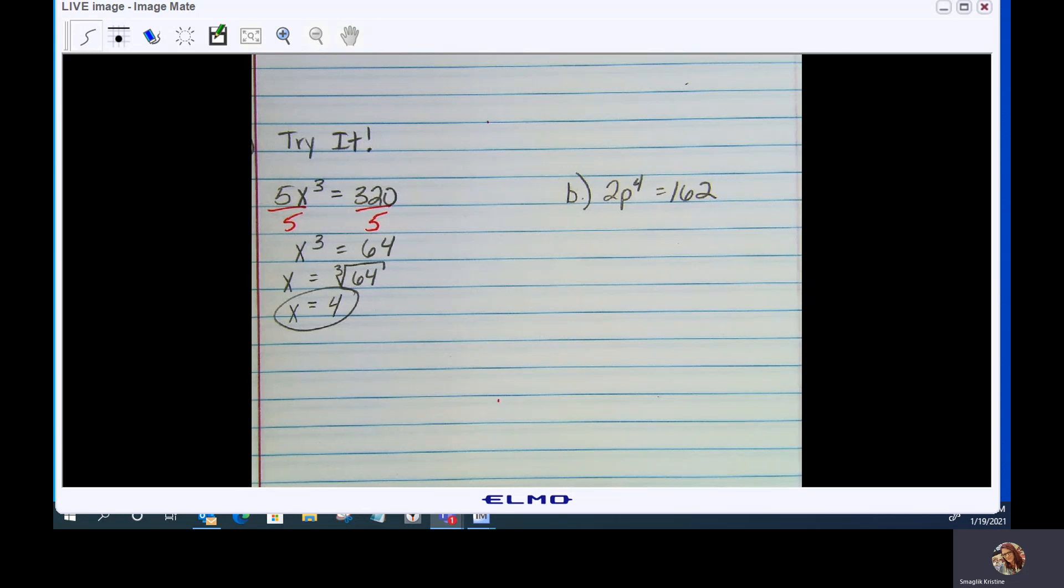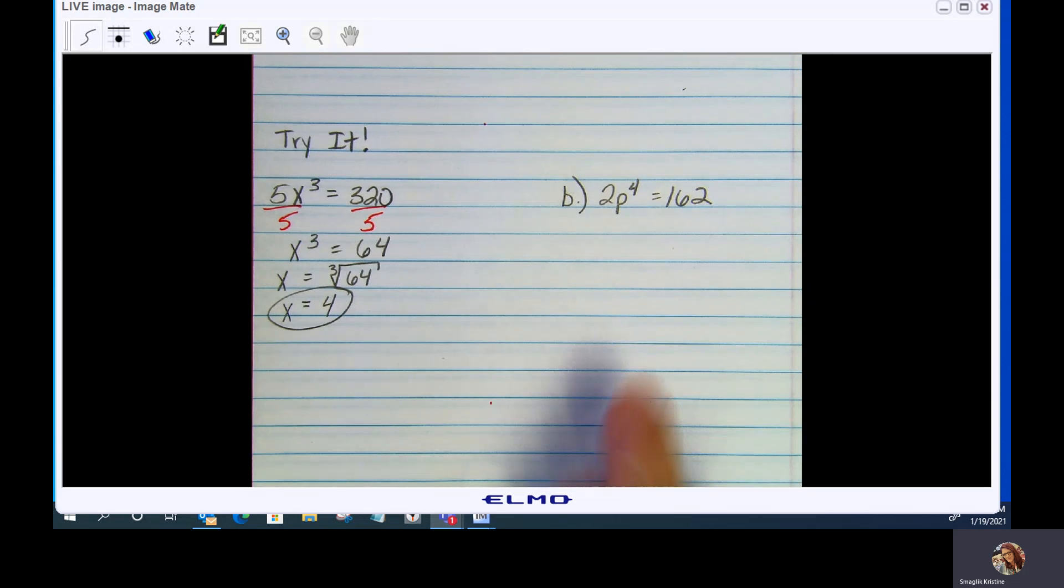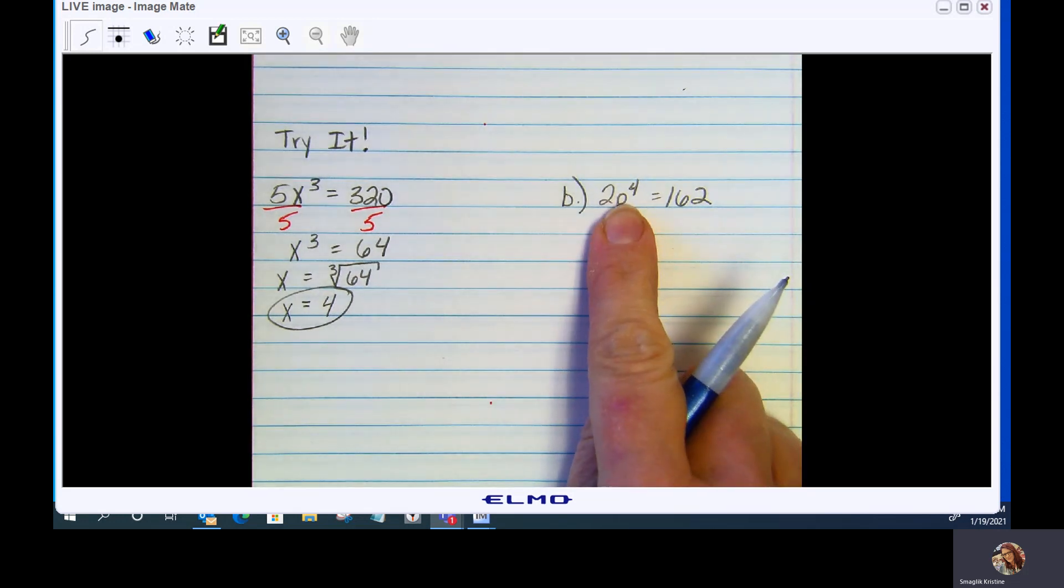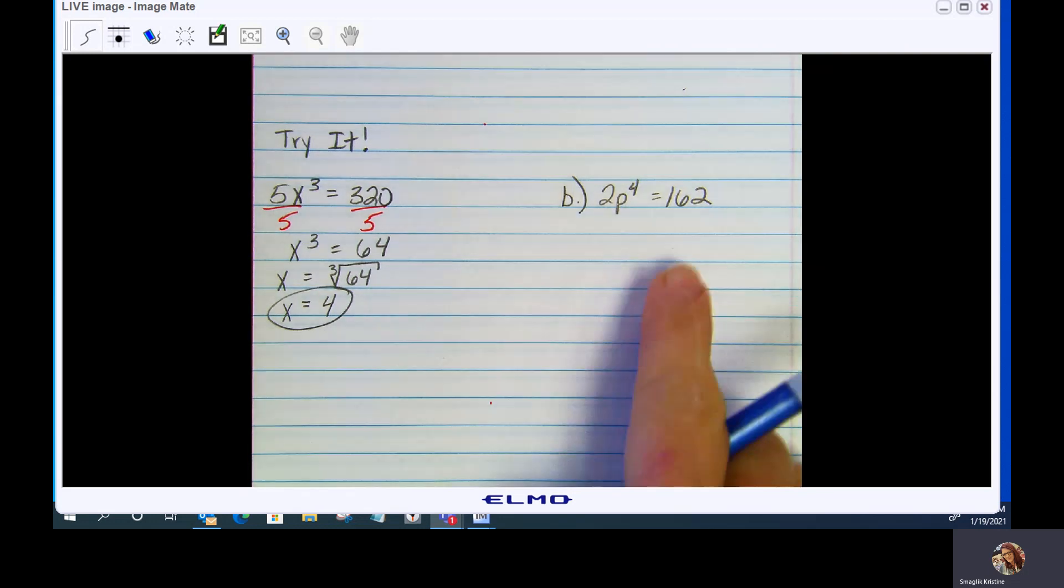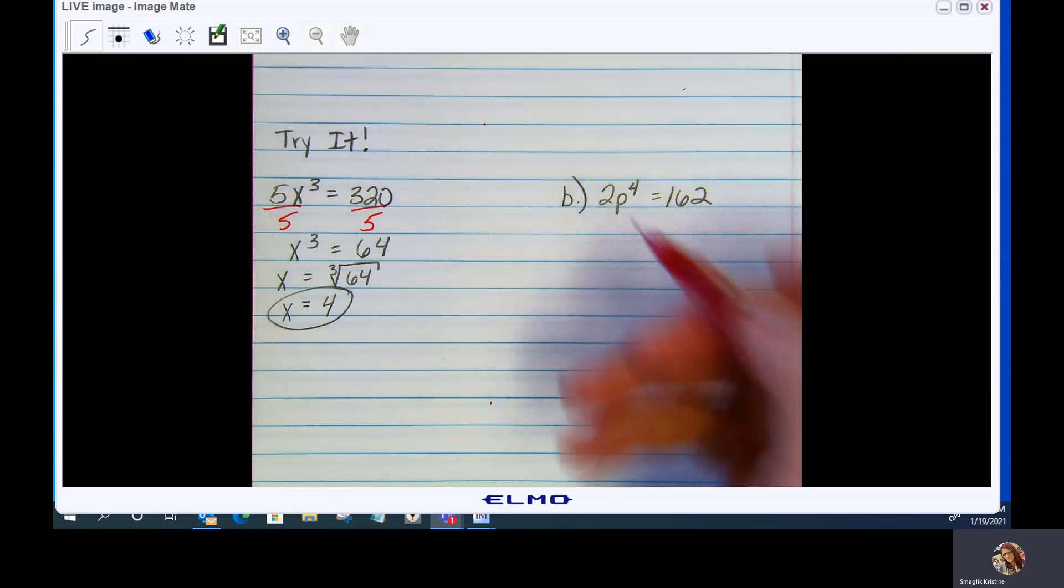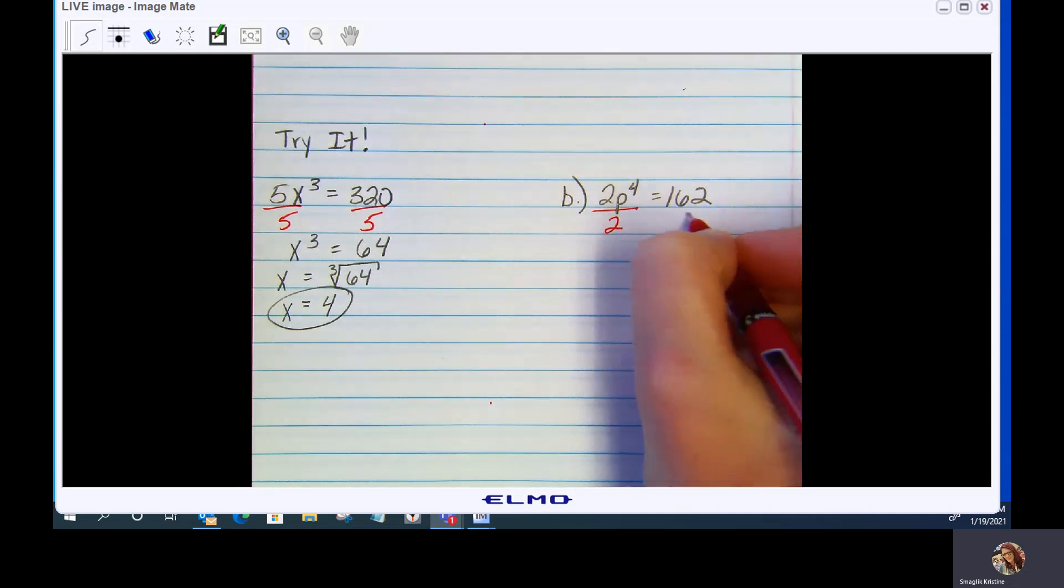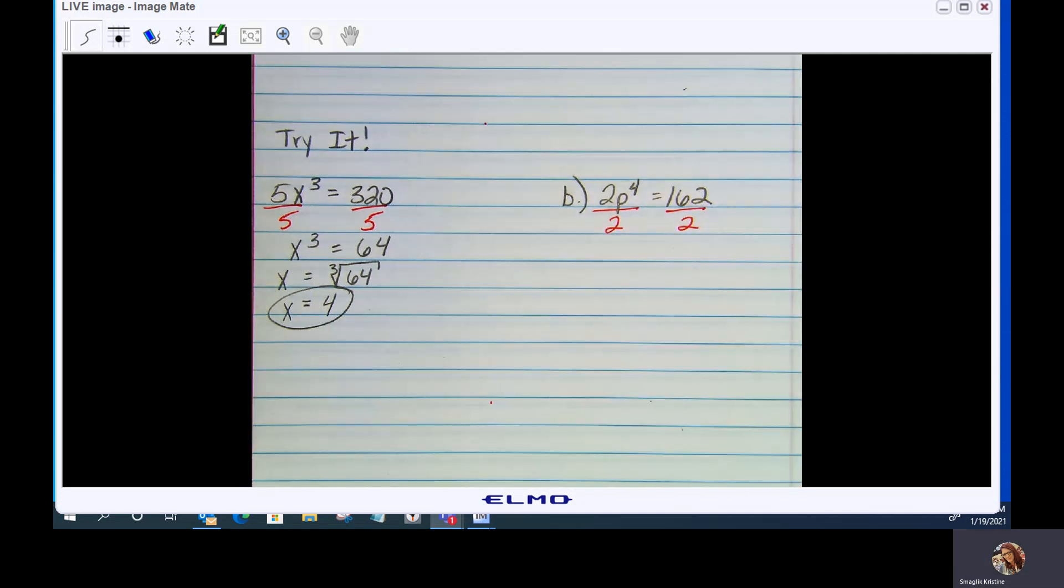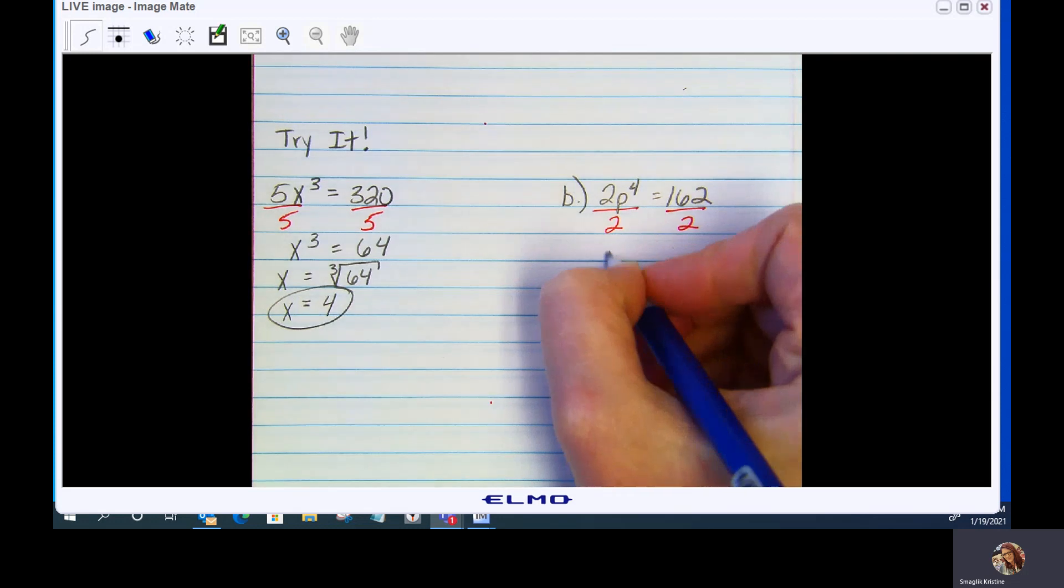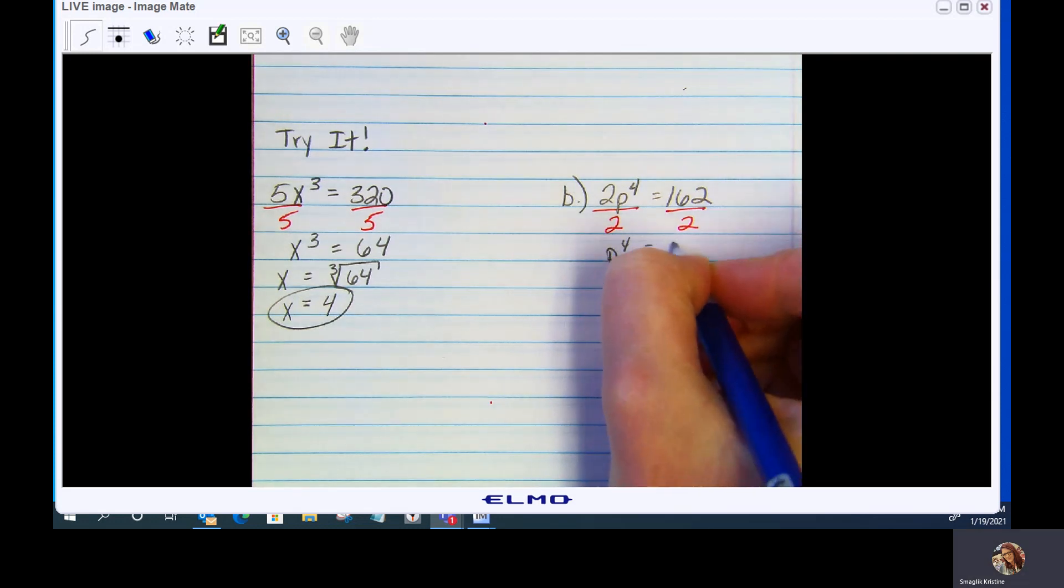Let's take a look at b. I've got 2p to the 4th. So if you notice here, you have an even power. So when we reduce that radical and get rid of that exponent, you will need to do a plus minus. So here we go. I'm going to divide out the 2. p to the 4th equals 81.